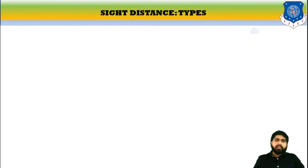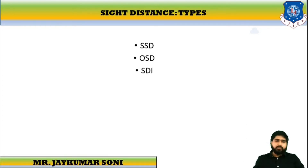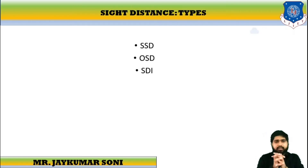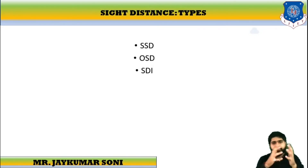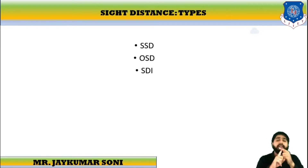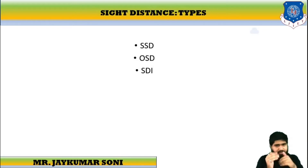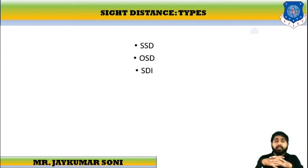Let us learn about various types of sight distance. There are three types of sight distances: SSD, that stands for stopping sight distance; OSD, that stands for overtaking sight distance; and SDI, that stands for sight distance at the intersection. We will learn all these types in detail, but let us first understand the concept of stopping sight distance.